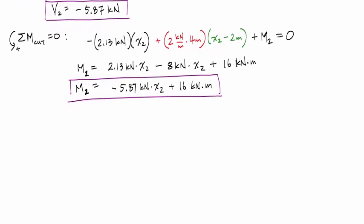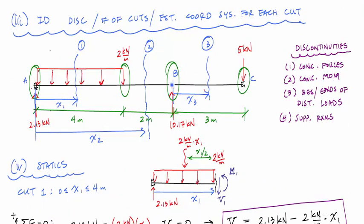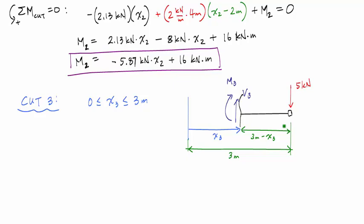For cut three, I make the cut and choose the right side of the FBD. The origin is at B, x3 ranges from zero to three meters. I draw the origin, label x3 to the cut, and note that the total span is three meters. The arm needed for the moment equation is three meters minus x3. Summing vertical forces gives V3 equal to five kilonewtons.